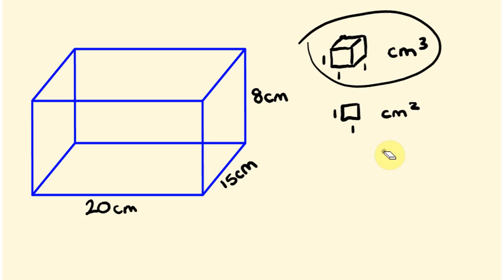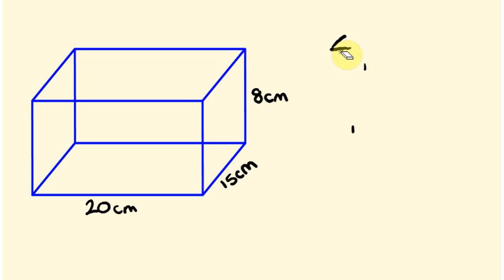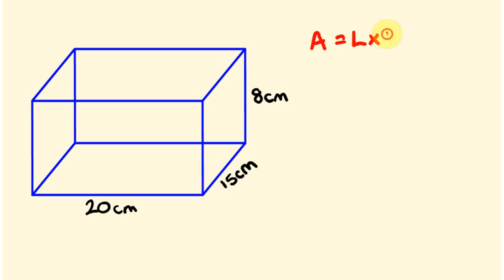Let's launch straight into this. The first thing you want to do is make sure all your units are the same — they're all in centimeters, which is good. If they're not in the same units, change them so they are. Next, identify the shape: this is a rectangular prism, a rectangular box type shape. Then apply the right formula. For a rectangular prism you can use: volume equals length times width times height.